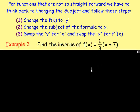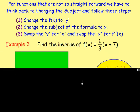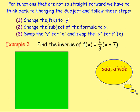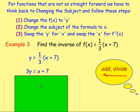Let's try another example — find the inverse of f of x equals a third of x plus 7. Doing this the exact same way: change f of x to y, so y equals a third of x plus 7. You then want to change the subject of the formula to x. What are you doing with x? It's in brackets, so you're adding 7 and then dividing by 3. So undo that — first get rid of the divide by multiplying both sides by 3, giving 3y equals x plus 7.